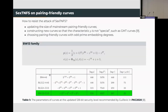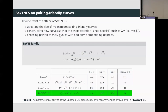In order to resist this attack, a direct way is to update the key size of popular pairing-friendly curves. Besides that, we can also construct new curves such that the characteristic P is not special. Since pairing-friendly curves with odd prime embedding degrees are immune to this attack, we can also choose such curves. Here, we recommend a family of curves named BW13, which has embedding degree 13 and can be parameterized by polynomials.